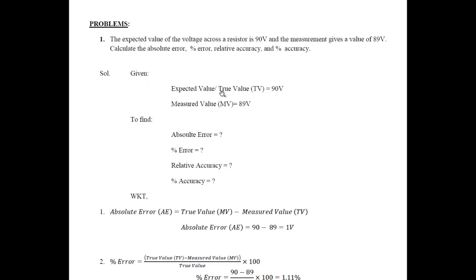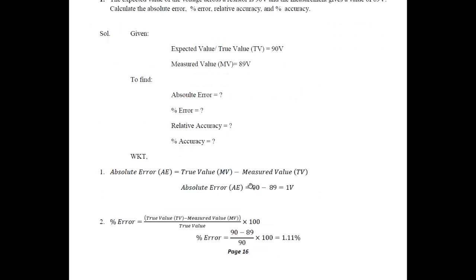Given: the expected value, which is your true value abbreviated as TV, is 90 volts; your measured value is 89 volts. What we need to find: absolute error, percentage error, relative accuracy, and percentage accuracy. Absolute error is given by true value minus measured value, that is 90 minus 89, which equals 1 volt. Percentage error is (true value minus measured value) divided by true value into 100, so our error is 1.11 percent.